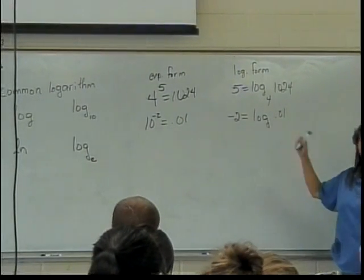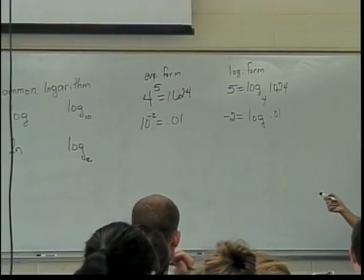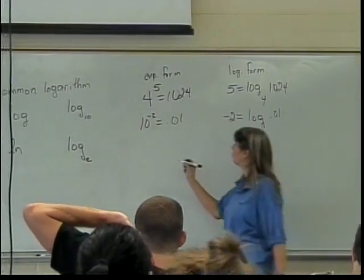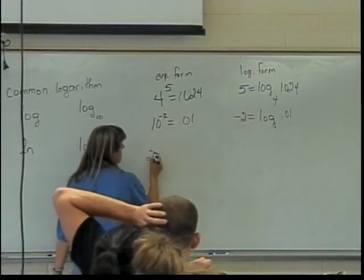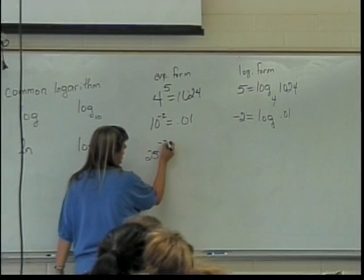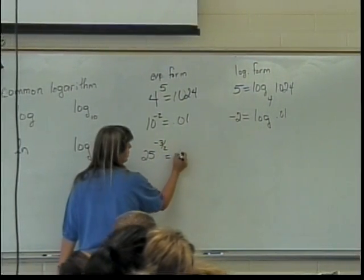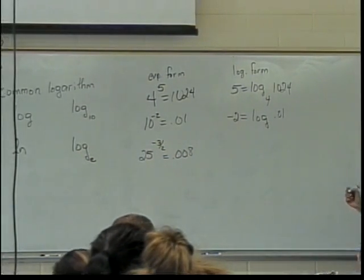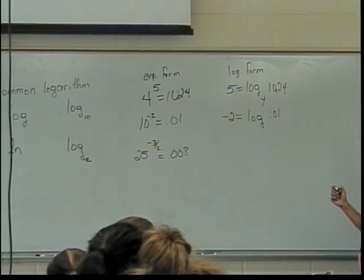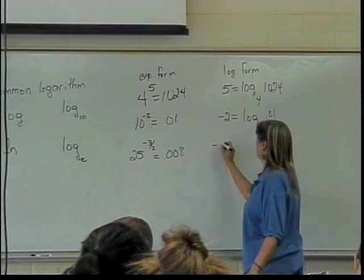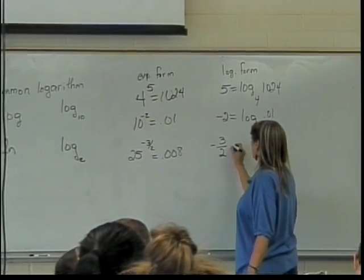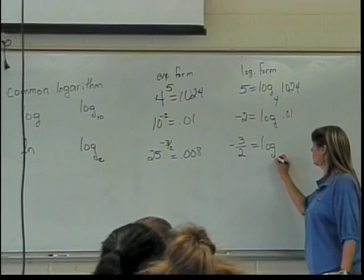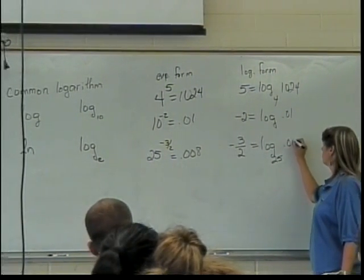Now, LOG in WebWork is log base 10, and LN is natural log base e. What about this one? 25 to the negative 3 halves is equal to 0.008. What would that look like in logarithmic form? Negative 3 halves equals log base 25 of 0.008.